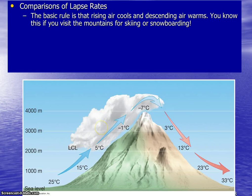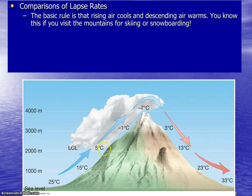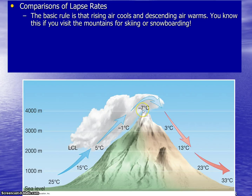At 2000 meters we've reached the lifting condensation level, so now we use the saturated adiabatic lapse rate. To find the temperature 1000 meters higher, we subtract 6 degrees Celsius — 5 degrees minus 6 is negative 1 degree Celsius. The air continues to rise another 1000 meters; again we subtract 6, and negative 1 minus 6 gives negative 7 degrees Celsius.